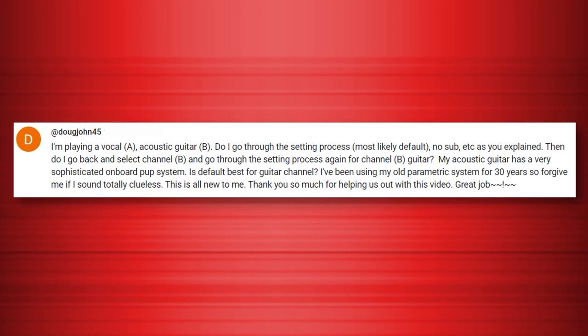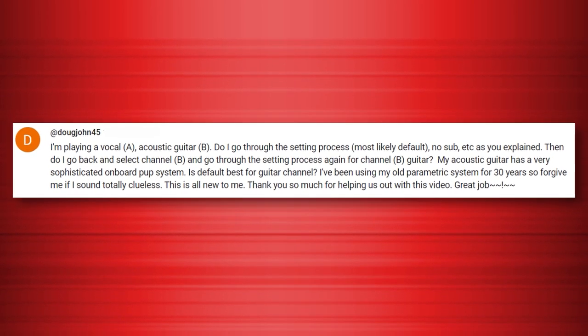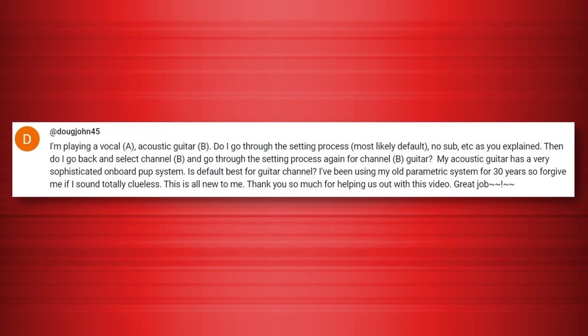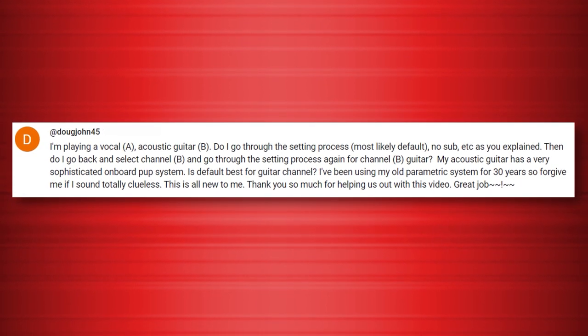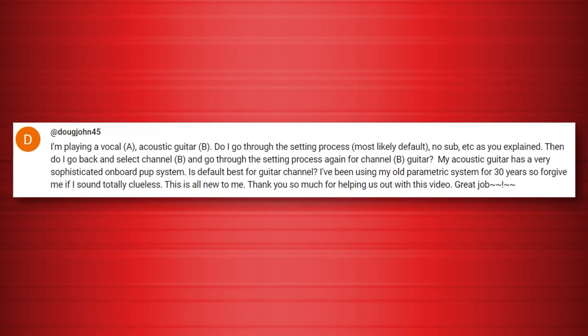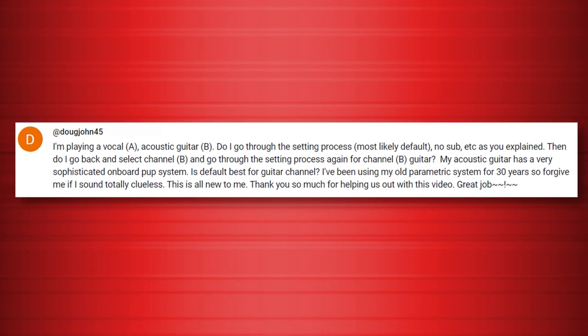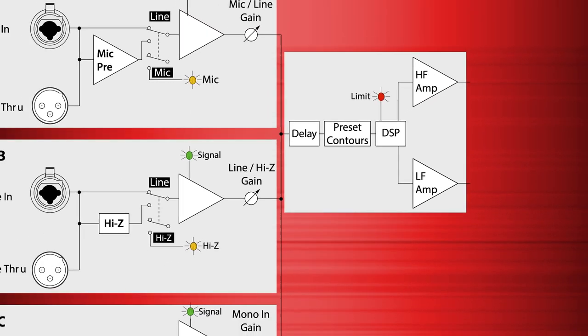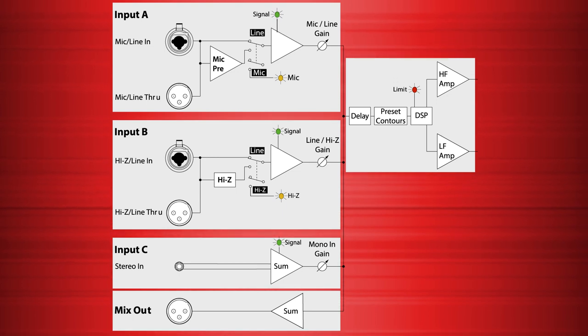Doug Johnson asked a question about input settings: I have a vocal in channel A and an acoustic guitar in channel B. Do I go through the setting process — no sub, etc. — as you explained, and then have to go back and select channel B and go through the setting process again for the guitar? My acoustic guitar has a very sophisticated onboard pickup system — is default best for my guitar channel? Most of the settings on the QSC are going to be applied to all of the inputs. The only input-specific things you can change are whether the input is mic or line level and the physical gain knob on the back panel. As we can see in the block diagram, settings like delays and presets are applied to each input source in the same way.